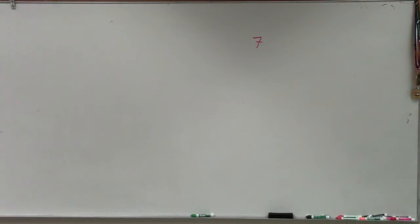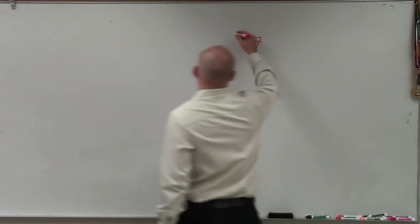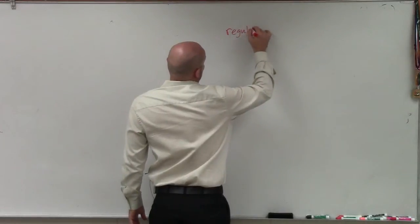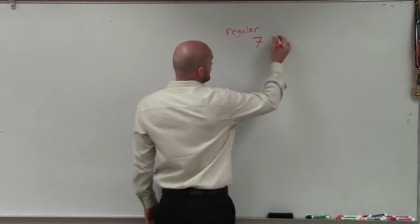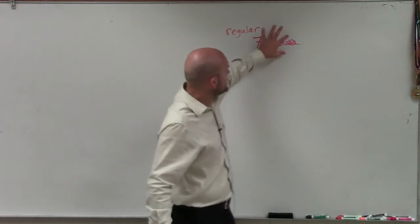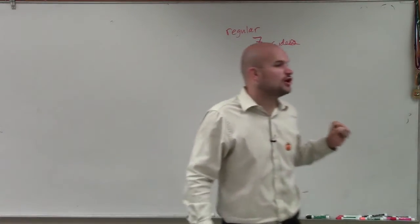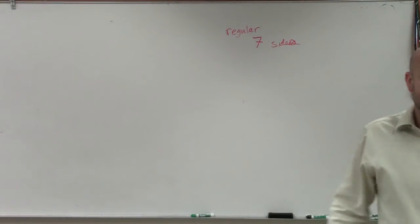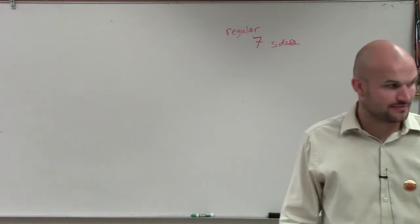On a problem like this, you have a regular polygon with seven sides. What they want you to do is determine the measure of all the interior and the measure of all the exterior angles.